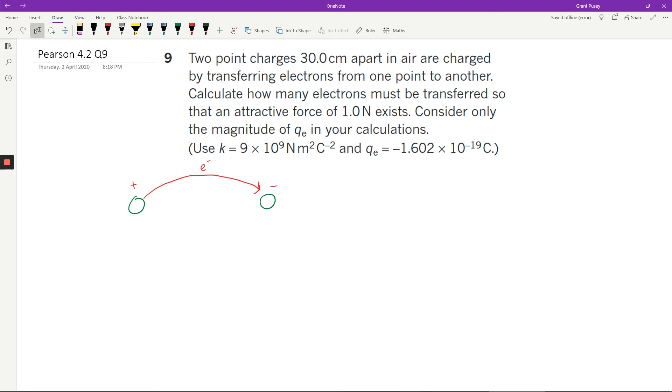And what the question is saying is how many electrons must be transferred so that an attractive force of 1.0 newtons exists? And it's talking about giving your answer. It's saying to consider only the magnitude of the charge on an electron, which is pretty typical.